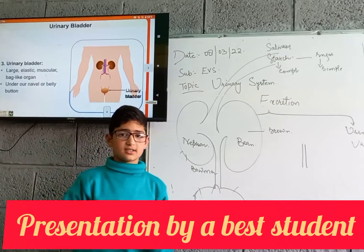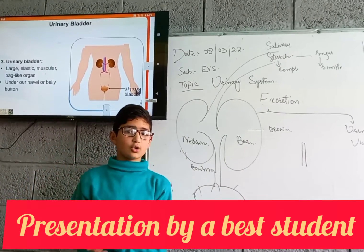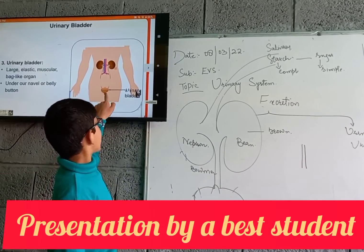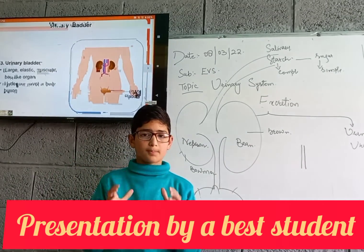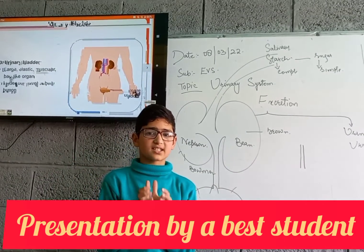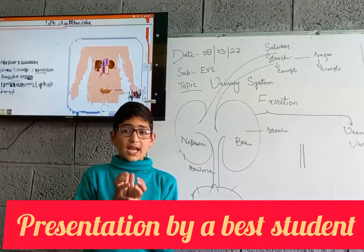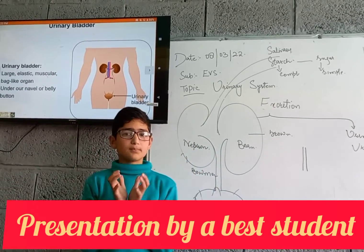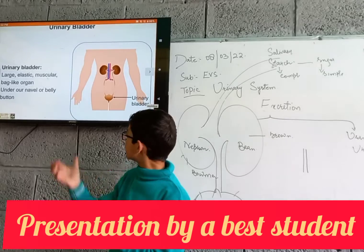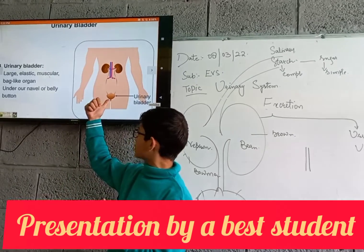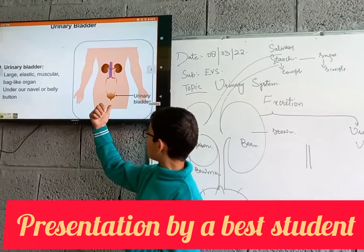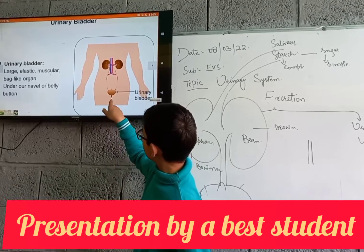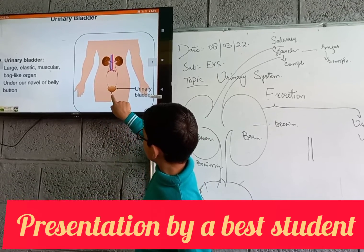The third part of the urinary system is the urinary bladder. The urinary bladder is a big pouch-like structure made up of muscles. Inside the urinary bladder, the urea — the toxic waste — is stored for about half an hour to one hour.